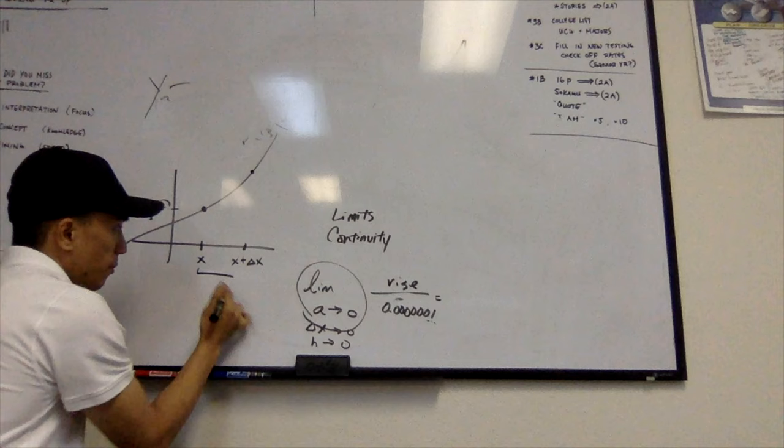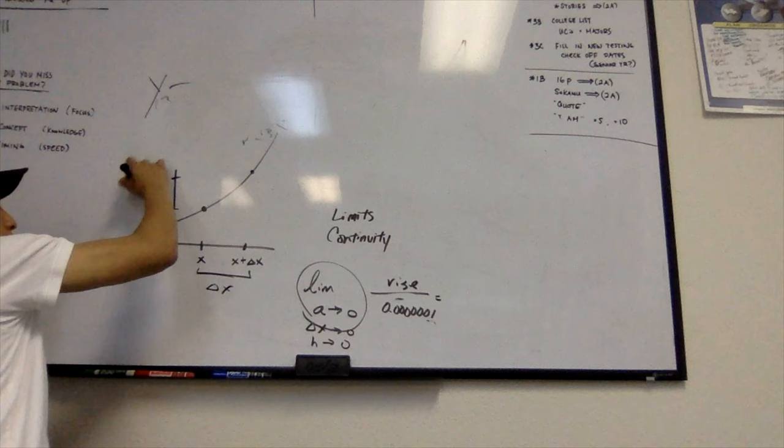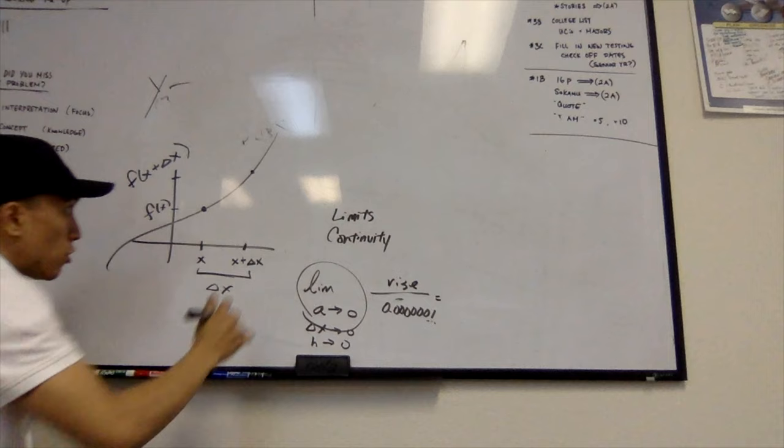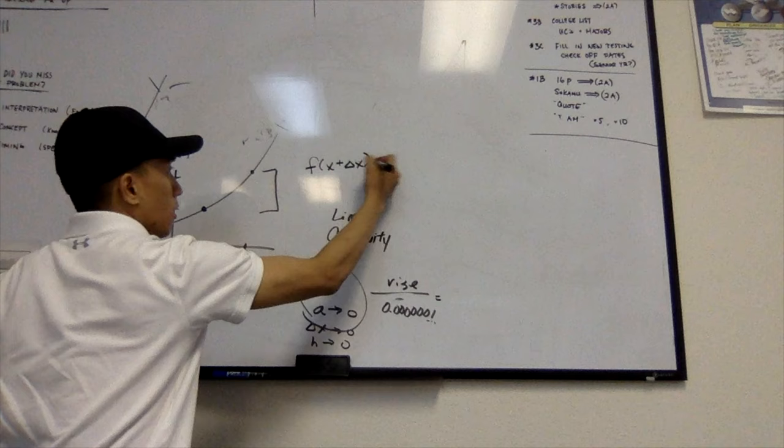So this value, now I'm just gonna make it the change of x for now just to make things easy. Then we have a value up here, f(x) plus the change of x. So what is my rise? My rise is this.